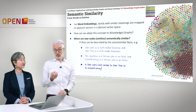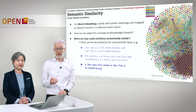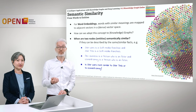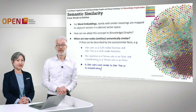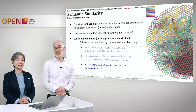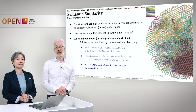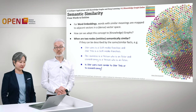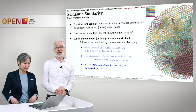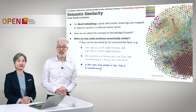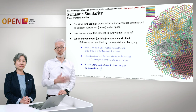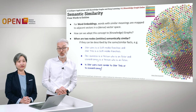When there are two nodes which are entities, when are they semantically similar? If they can be described by the same or similar facts, then they should be similar. For example, Star Wars is a Sci-Fi media franchise and Star Trek is a Sci-Fi media franchise. Or, Alec Guinness is a person who is an actor and Leonard Nimoy is a person who is an actor. Is Star Wars then more similar to Star Trek or to Leonard Nimoy? For us the question is clear — of course it's more similar to Star Trek.